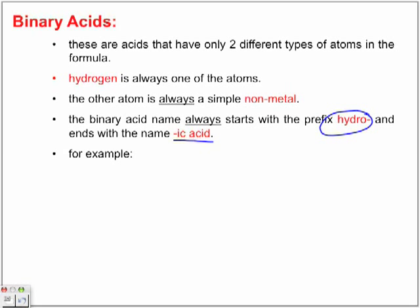So let's look at an example here. Hydrogen and chlorine. Because we're naming this as an acid, we have the hydrogen and we call it hydro, the prefix hydro.